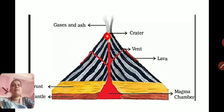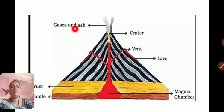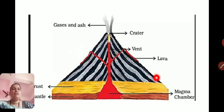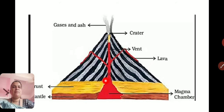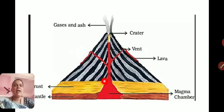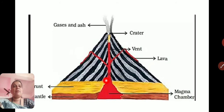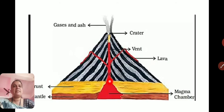The magma erupts on the surface through the vent. After erupting, huge clouds form from the hot gases and ashes that spread in the surrounding area. This is how volcanic eruptions take place. Famous active volcanoes include Mount Kilimanjaro and Fujiyama, where volcanic eruptions occur again and again.